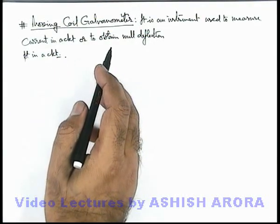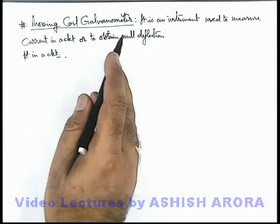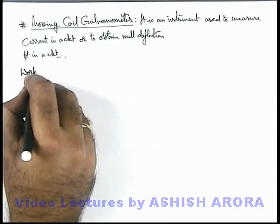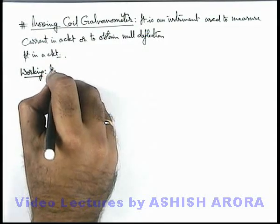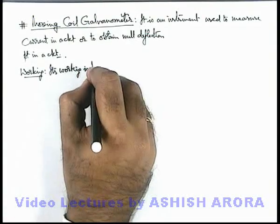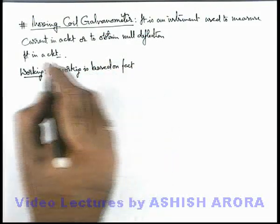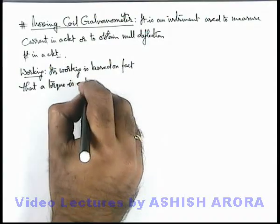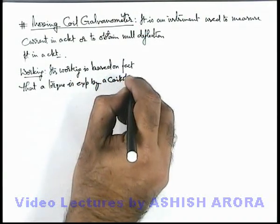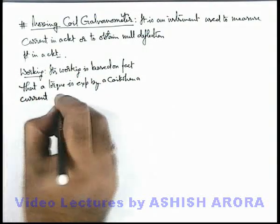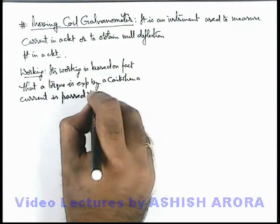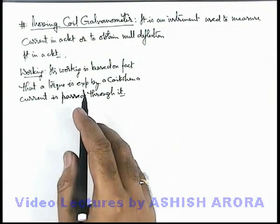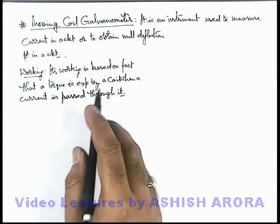This is a common deflection type meter which we've already studied in the previous section. A normal galvanometer which is deflection type is considered as a moving coil galvanometer, and now we'll also study its working. Its working is based on the fact that a torque is experienced by a coil when a current is passed through it. When a current is passed through a coil, it experiences a torque if it is placed in a magnetic field, and due to the torque the coil will start its rotational motion.